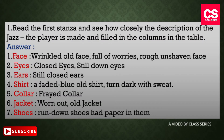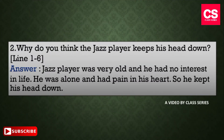Our first question is: read the first stanza and see how closely the description of the jazz player is made, and fill in the columns in the table. The answer: number one, face — wrinkled old face full of worries, rough unshaven face. Number two, eyes — closed eyes, still down eyes. Number three, ears — still closed ears. Number four, shirt — a faded blue old shirt turned dark with sweat. Number five, collar — freight collar. Number six, jacket — worn out old jacket.